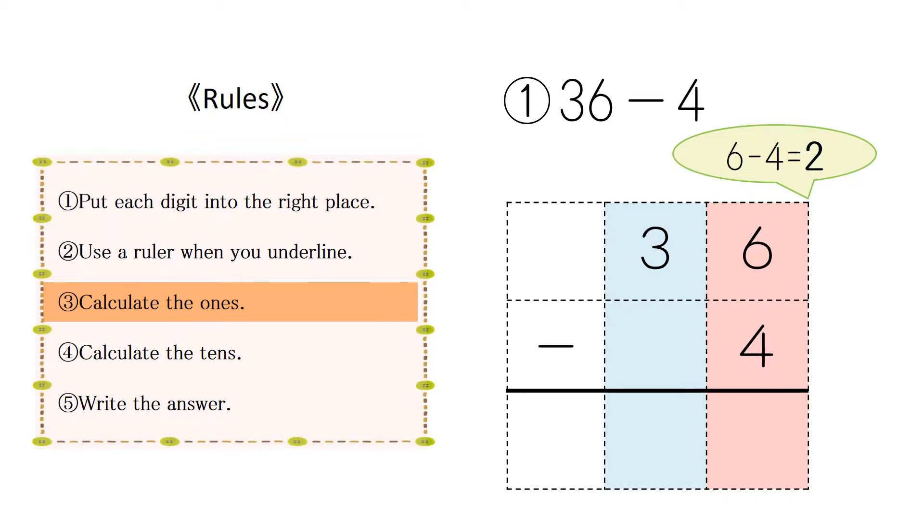First, calculate the ones. 6-4 equals 2. Write 2 to the ones place.